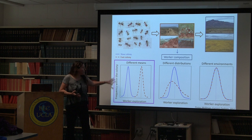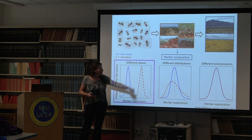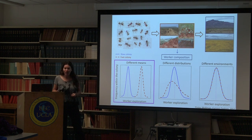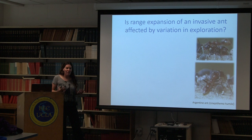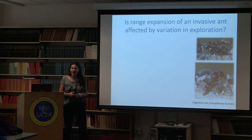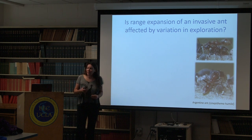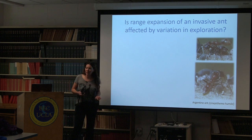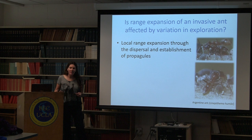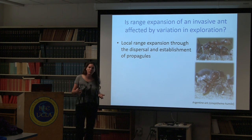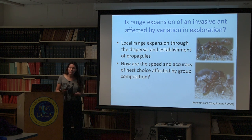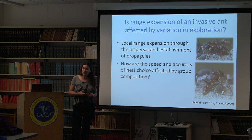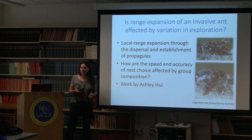I'll start with a quick example for the different mean hypothesis, then focus most of the talk on different distributions, and end with an example of different environments. The first example about different means comes from the Argentine ants - invasive species from Argentina that have been expanding their range in California and throughout the world, spreading through dispersal of propagules, which are groups of workers with one or more queens. We wanted to know how the speed and accuracy of nest choice by these propagules is affected by group composition.